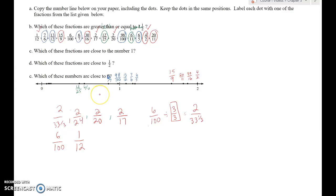So, in order from least to greatest, you have 6/100 here, you have 1/12 here, you've got 2/20 there, and you have 2/17 here. Thanks for your patience, guys.